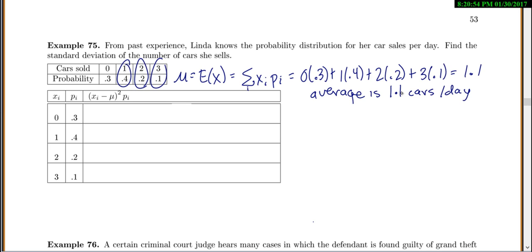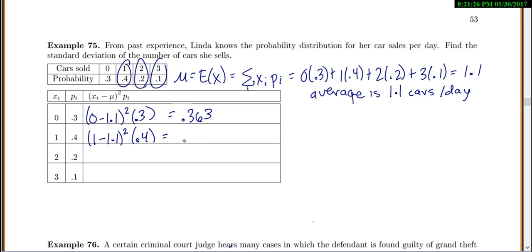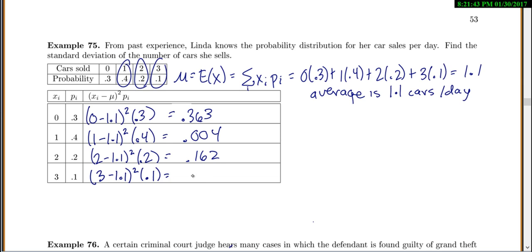The first step is always to find the average, because now you can go through and find the variance. To find the variance, you take each x_i value minus the mean, squared, times its probability. So the first x value is 0 minus 1.1, squared, times 0.3, which is 0.363. Then 1 minus 1.1, squared, times 0.4, which is 0.004. Then 2 minus 1.1, squared, times 0.2, which is 0.162. And 3 minus 1.1, squared, times 0.1, which gives 0.361.